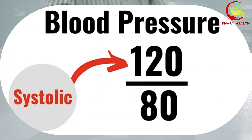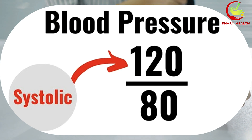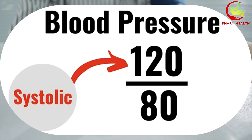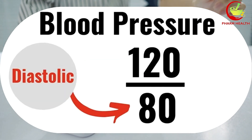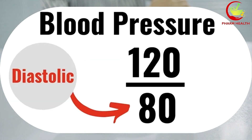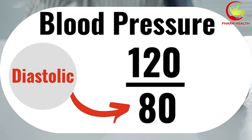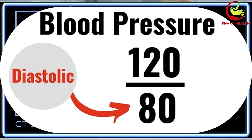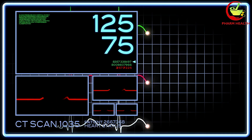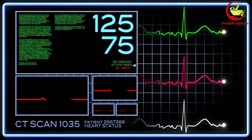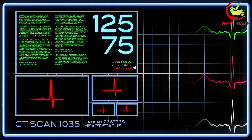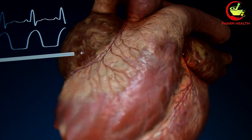The top number represents systolic blood pressure, which is the pressure in our arteries when the heart beats and pumps blood. The bottom number represents diastolic blood pressure, which is the pressure in our arteries when the heart is at rest between beats. Blood pressure readings are essential in assessing our cardiovascular health.